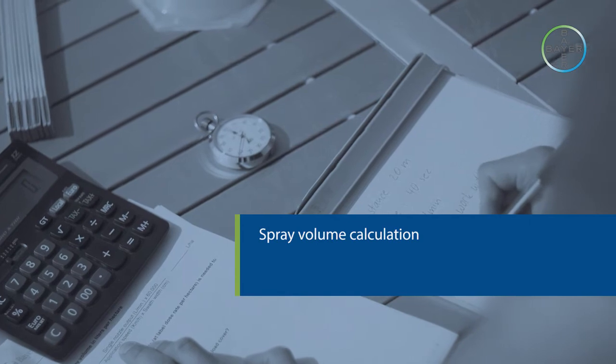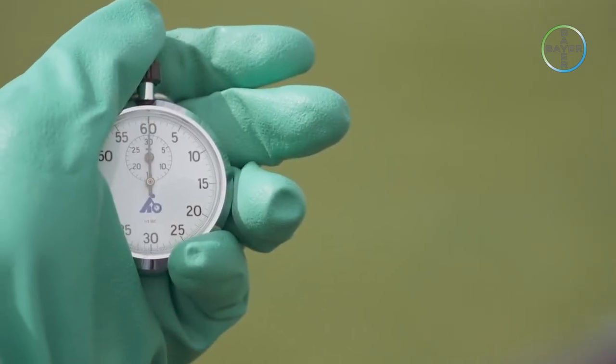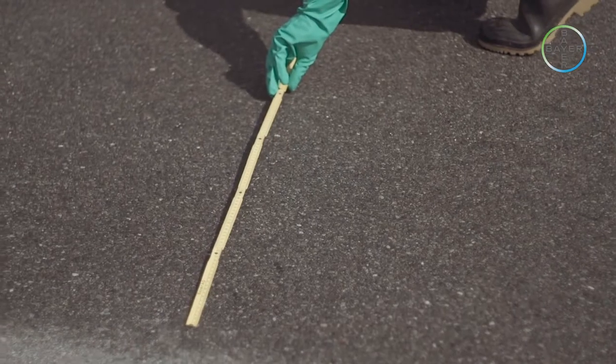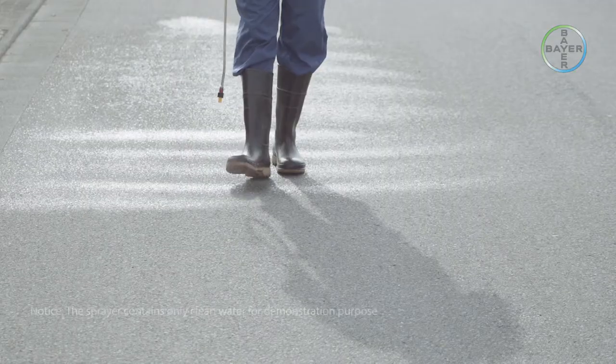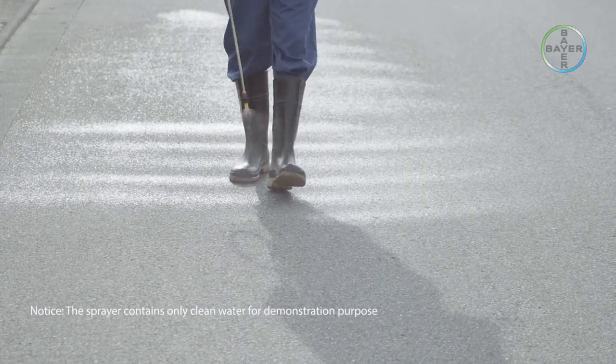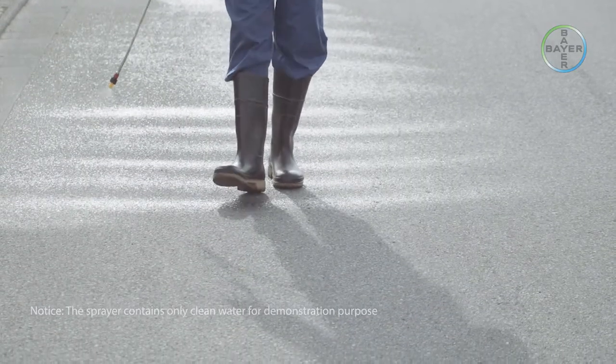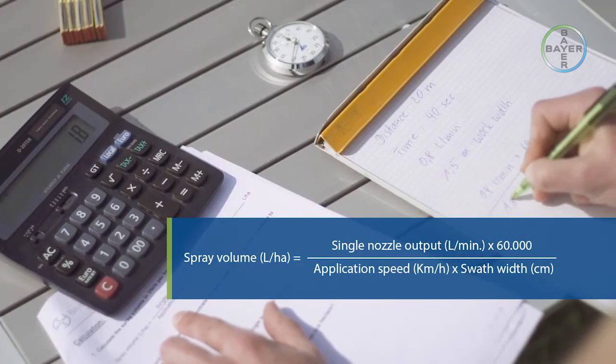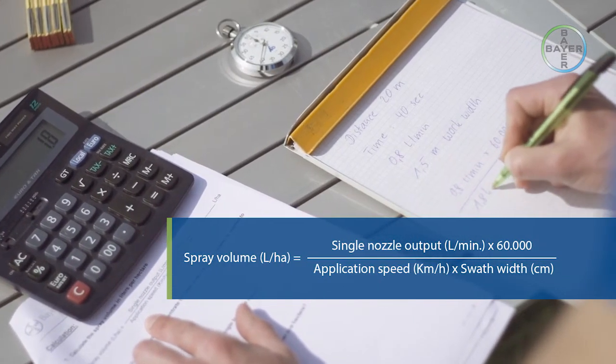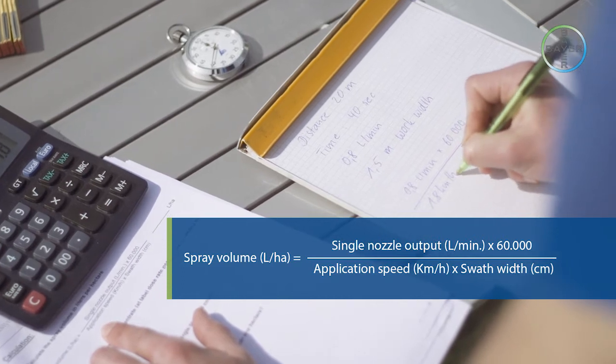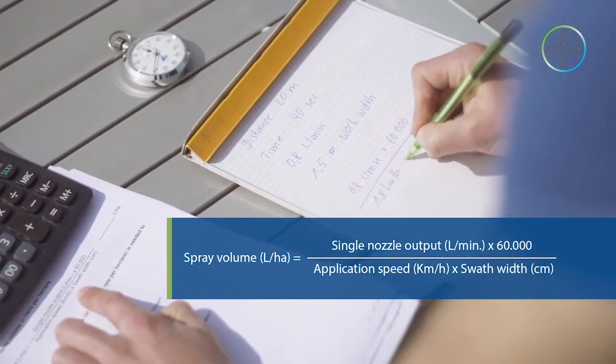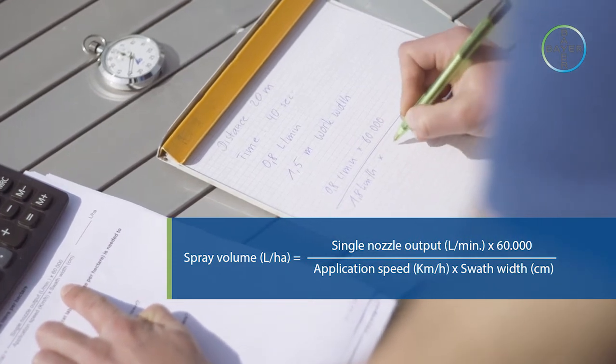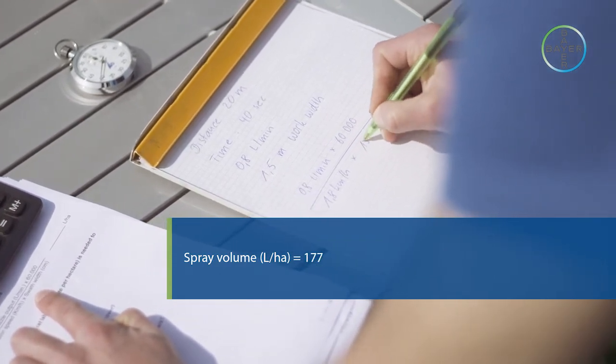Spray volume calculation. Having measured the walking speed and the nozzle output, we now have the basis for our calculation of spray volume in liters per hectare. Calculate the spray volume in liters per hectare: spray volume in liters per hectare equals single nozzle output, liters a minute, times 60,000, over application speed, kilometers per hour, in swathe width, centimeters, equals 177 liters per hectare.